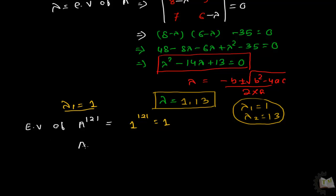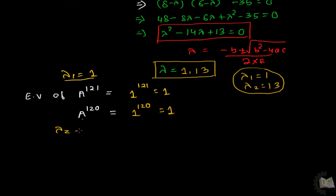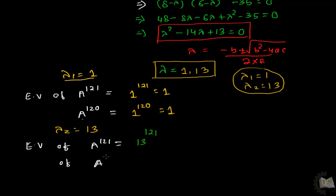Similarly, the eigenvalue of A to the power 120 is 1 to the power 120, and if you multiply 1 up to 120 times you still get 1. Next, when we put the eigenvalue as 13: the eigenvalue of A^121 is 13 to the power 121, and the eigenvalue of A^120 is 13 to the power 120.